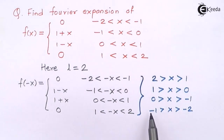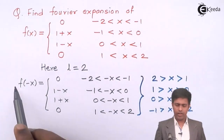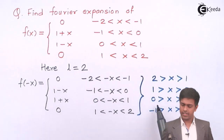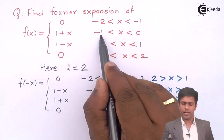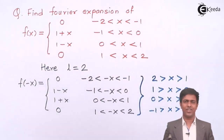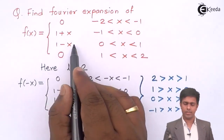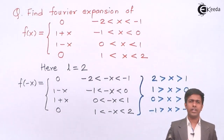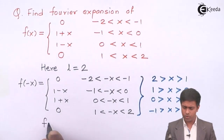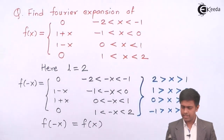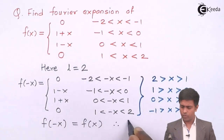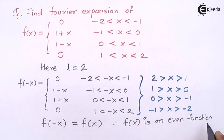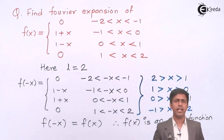Now comparing f(-x) with f(x): on [-2,-1] both give 0; on [-1,0] both give (1+x); on [0,1] both give (1-x); on [1,2] both give 0. Every value matches in every interval, so f(-x) = f(x). Therefore, the given function f(x) is an even function.